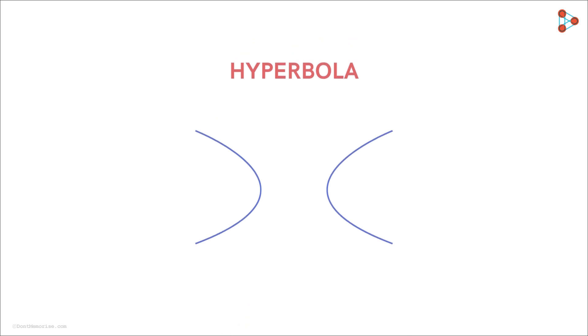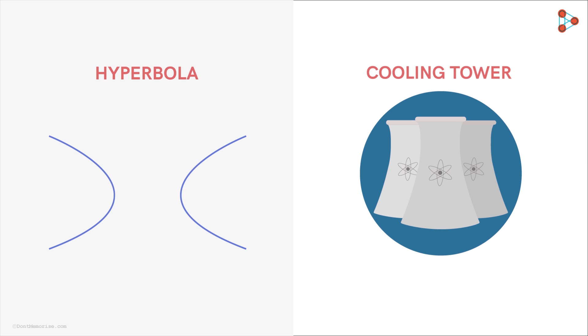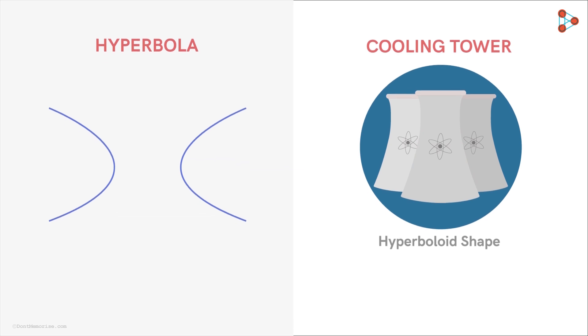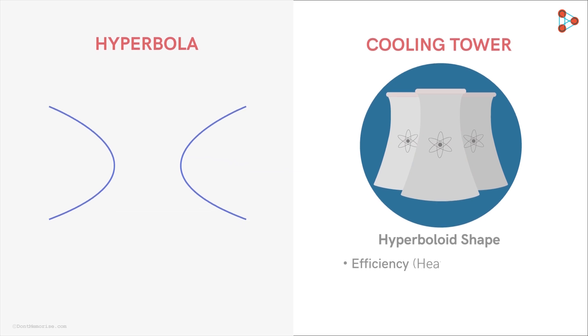Similar to the other conic sections, it has many interesting properties. For example, the cooling towers of power plants or nuclear plants are hyperboloid in shape. But why? A cooling tower should be shaped such that first it is efficient in the heat removal process.